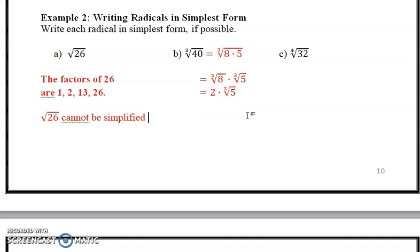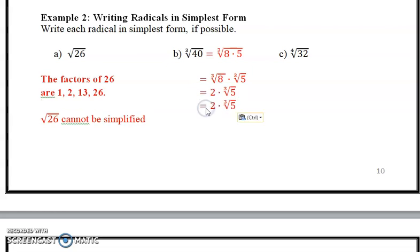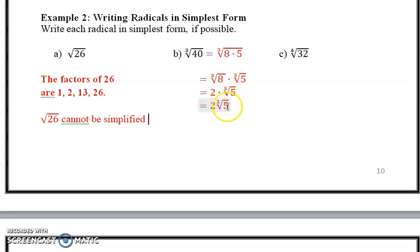You can just write it as 2 times the cube root of 5 — you don't need the multiplication dot. The index is 3, we have the root sign, and the radicand is 5. That's the final answer. So that's called a mixed radical.